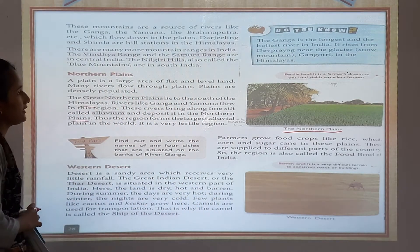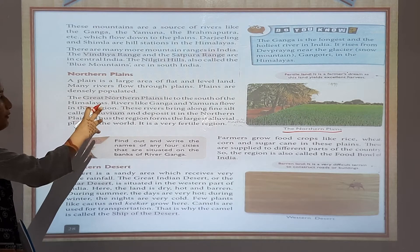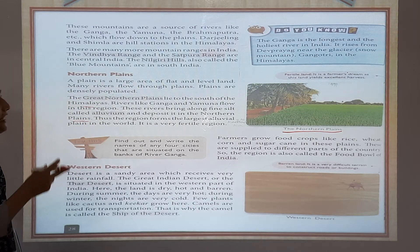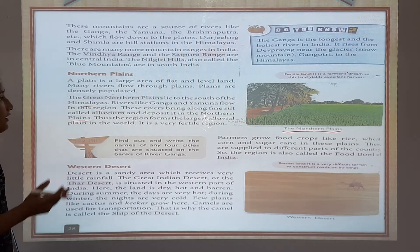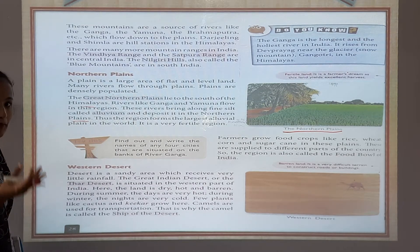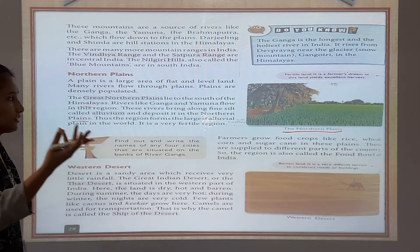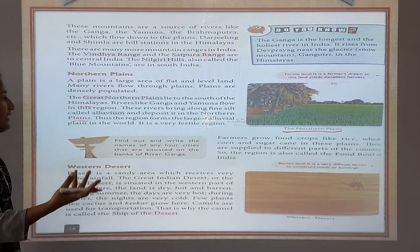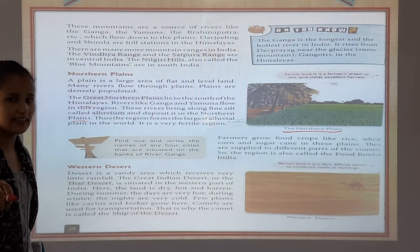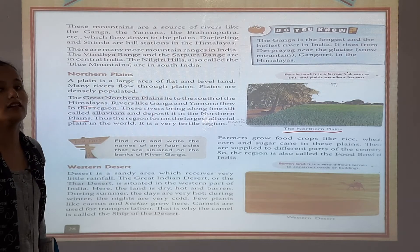Next, western desert. In the northern plains, it is a large flat area with many rivers like Ganga and Yamuna flowing to the south of the Himalayas, bringing fine silt called alluvium which is deposited in the northern plains.